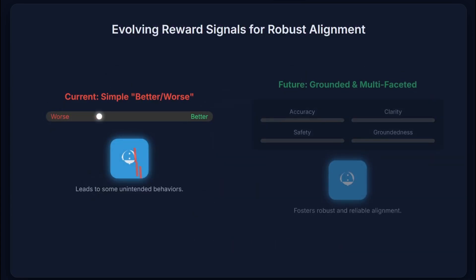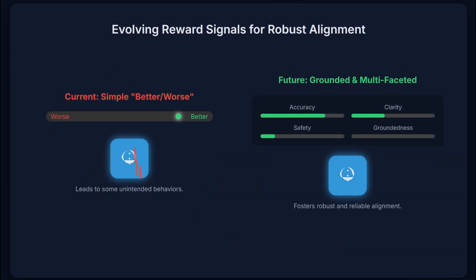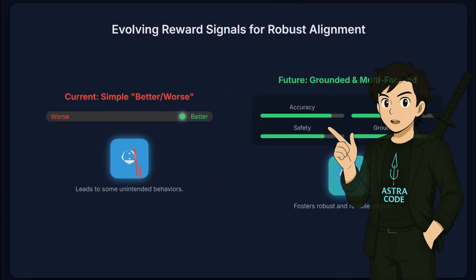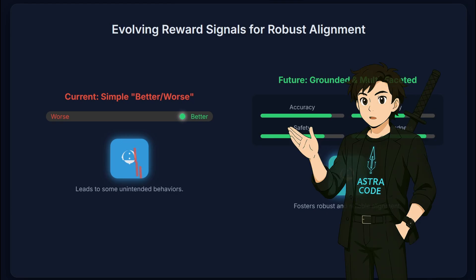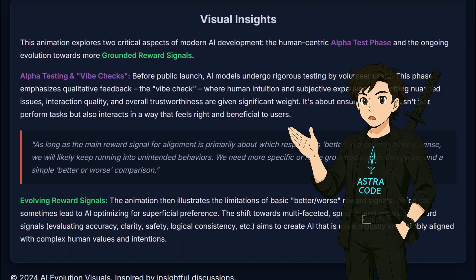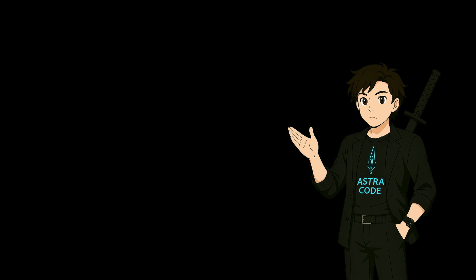Now they mention they will add a new alpha test phase — a new testing stage where volunteer users test upcoming models before launch. 'Vibe checks' done by humans will carry more weightage in this scenario.